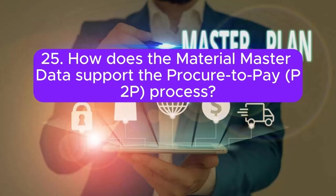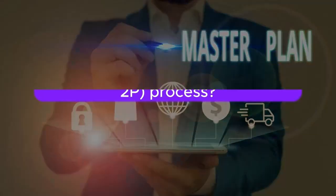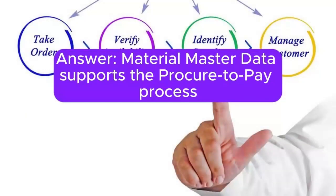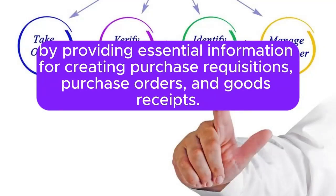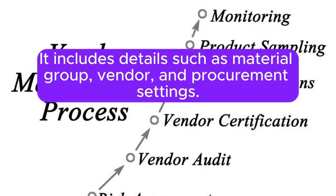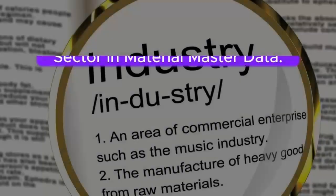Question 25: How does the Material Master data support the Procure-to-Pay (P2P) process? Material Master data supports the Procure-to-Pay process by providing essential information for creating purchase requisitions, purchase orders, and goods receipts. It includes details such as Material Group, Vendor, and Procurement Settings.